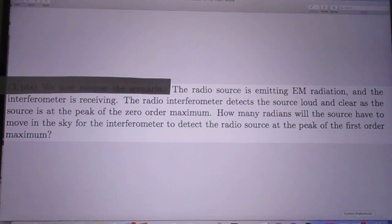The radio source is emitting EM radiation and the interferometer is receiving. The radio interferometer detects the source loud and clear as the source is at the peak of the zero-order maximum.